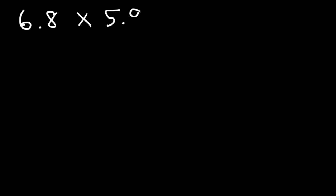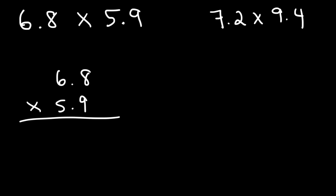Now let's try these example problems: 6.8 times 5.9, and also 7.2 times 9.4. Go ahead and work on those two examples. So first, we have 9 times 8. 9 times 8 is 72. So let's write the 2 and carry over the 7. And then we have 6 times 9, which is 54, plus 7, so that's going to be 61.